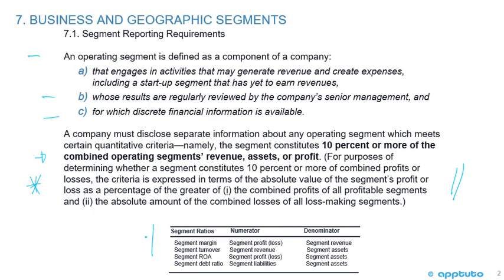Here we have the segment ratios — these are the same as regular ratios but applied at the segment level. Segment margin is segment profit or loss divided by revenue. Segment turnover is revenue over assets — asset turnover — which can also be expressed as number of days. Segment ROA is segment profit or loss divided by assets, return on assets. And the segment debt ratio is segment liabilities divided by segment assets.